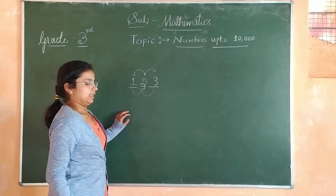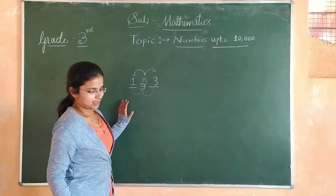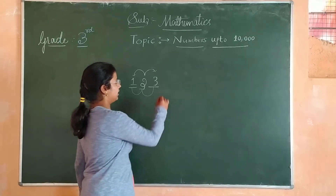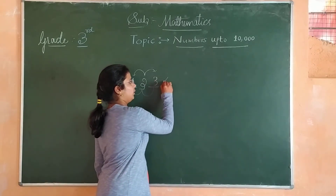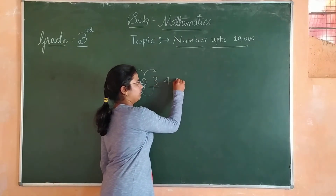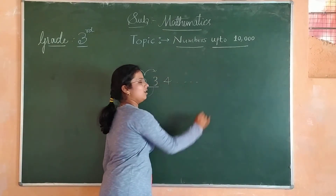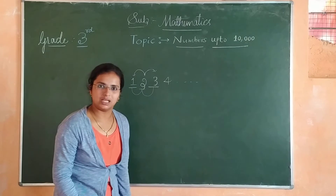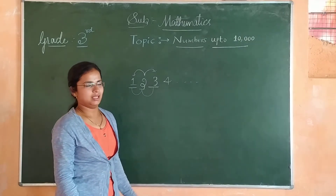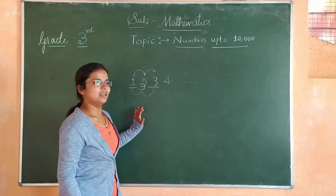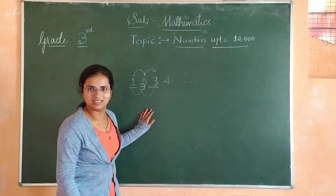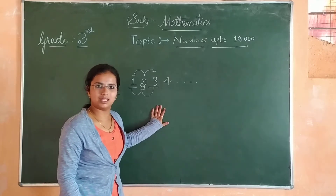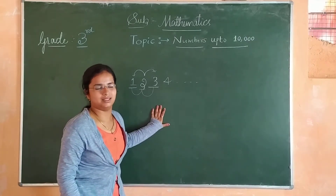The numbers which follow one another, like 1, 2, 3, 4 and so on, are called consecutive numbers.